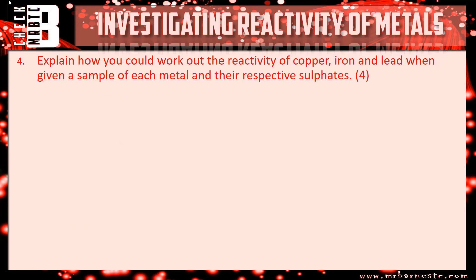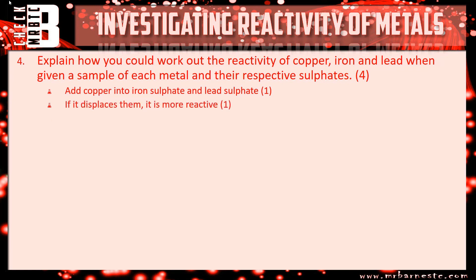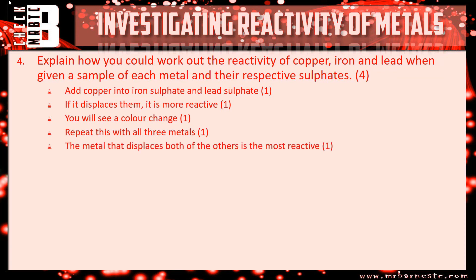For question four, to work out the reactivity of copper, iron and lead using their respective sulfates: take copper and add it to iron sulfate and lead sulfate, then observe what happens — if it displaces them it's more reactive and you'll see a colour change. Do this with all three metals: add iron to copper sulfate and lead sulfate, and lead to copper sulfate and iron sulfate. The metal that displaces both others is the most reactive; the metal that displaces none is the least reactive.